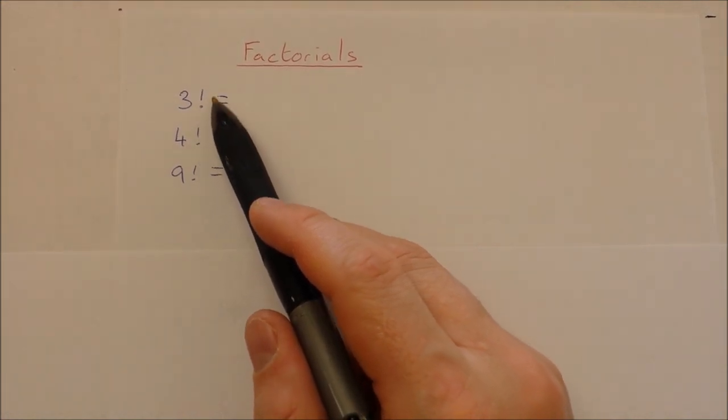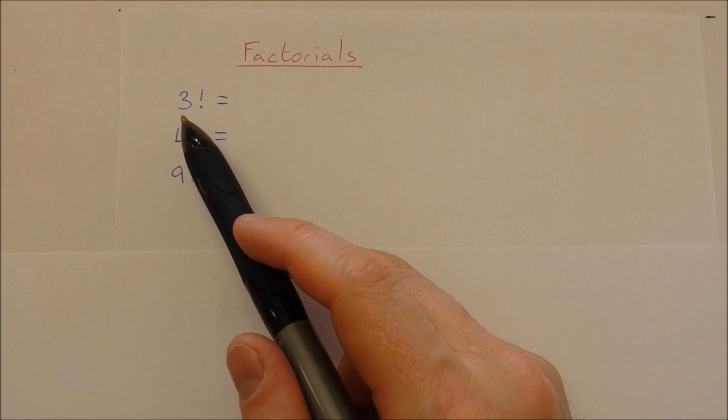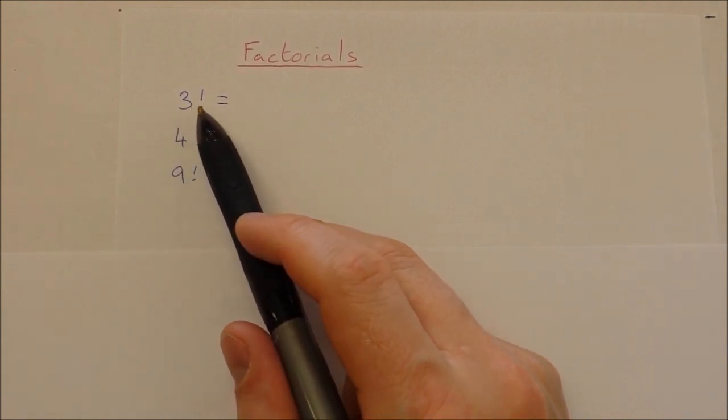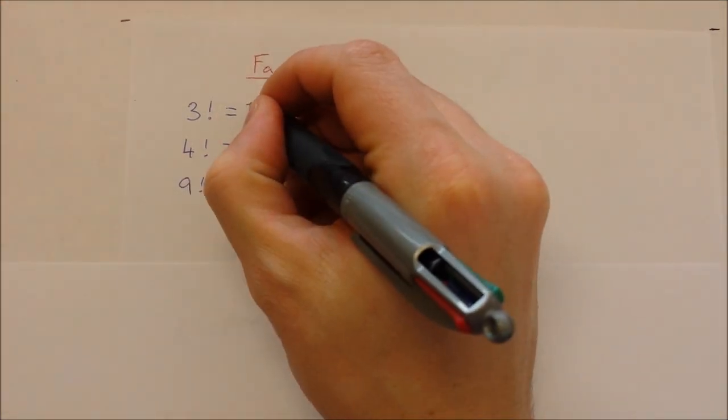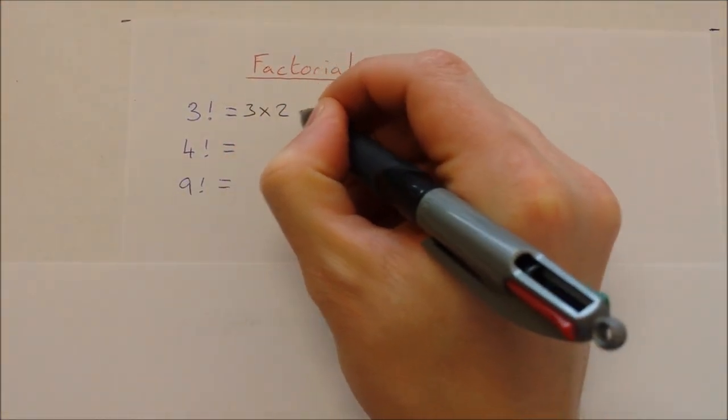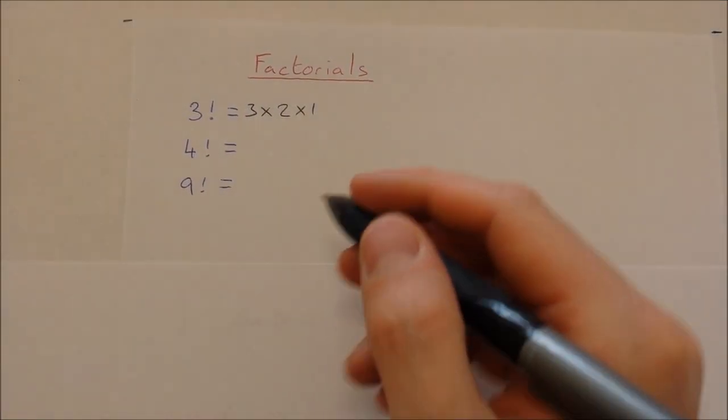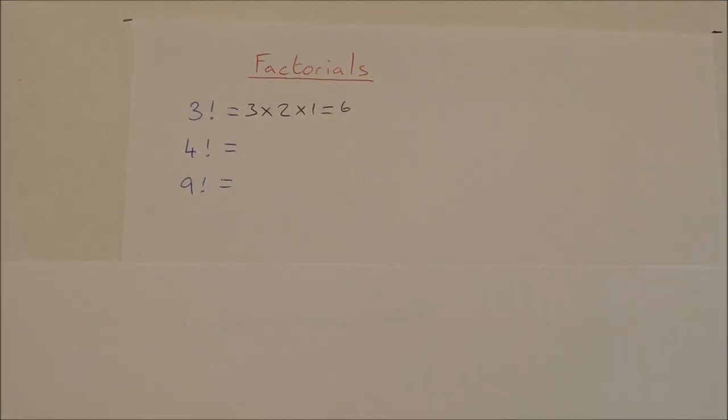So first of all, the symbol for factorial is the exclamation mark. This 3 exclamation mark is read as three factorial. And what does that mean? Three factorial means 3 multiplied by 2 multiplied by 1. And 3 by 2 is 6, by 1 is still 6. So 3 factorial is equal to 6.